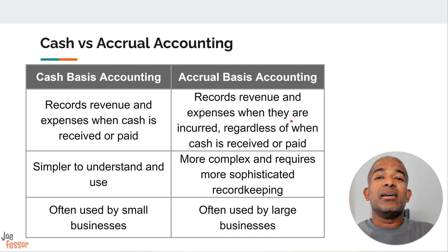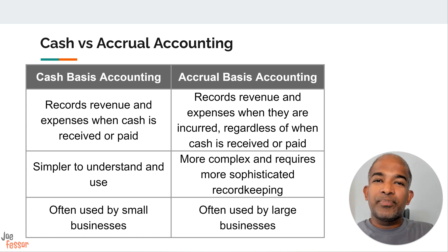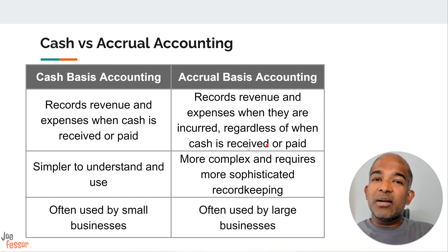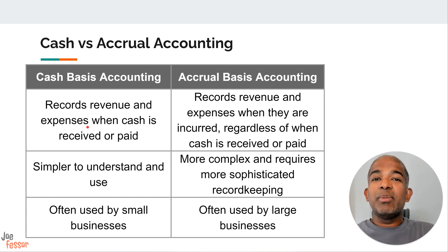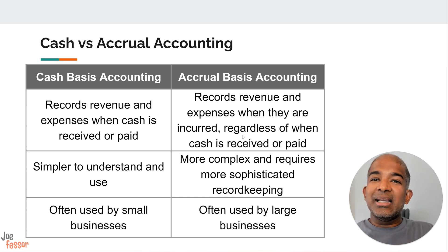And expenses are recognized when they are incurred, even if the bill hasn't been paid yet. This method provides a more accurate picture of a company's financial position at any given point in time, but it's also more complex and requires more sophisticated record keeping — that's why it's generally used by larger businesses and is required for publicly traded companies. Imagine a company sells a product on credit in December but receives payment in January. Under cash basis accounting, the revenue would be recorded in January, but under accrual basis accounting, it would be recorded in December, when the sale actually occurred. In a nutshell, cash basis accounting is about the timing of cash flows, while accrual basis accounting is about the timing of economic events.